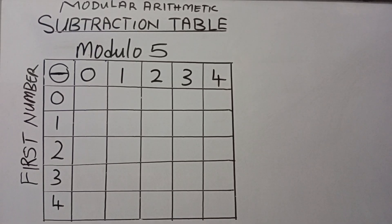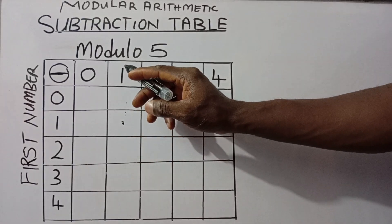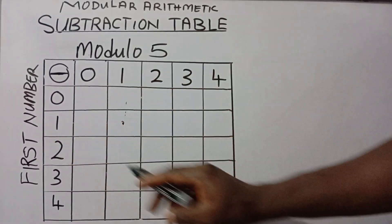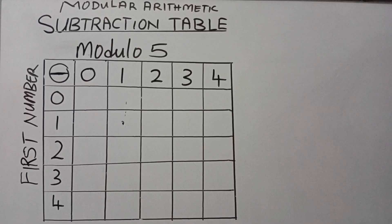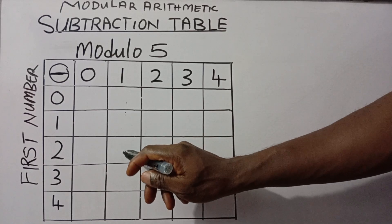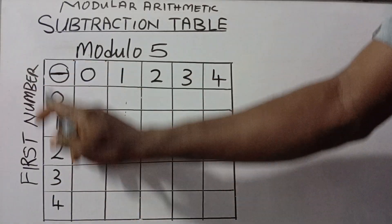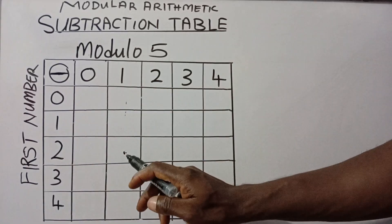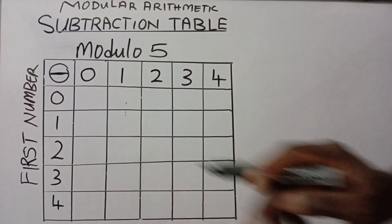We are to perform the subtraction in Modular 5. To find the number that will be in a cell, the connection is between the number that aligns in the row and the number that aligns in the column. So for a cell with connection between 2 and 1, all we need to do is mention the column number first — that means 2 minus 1 — and that will tell us what we are going to have there.